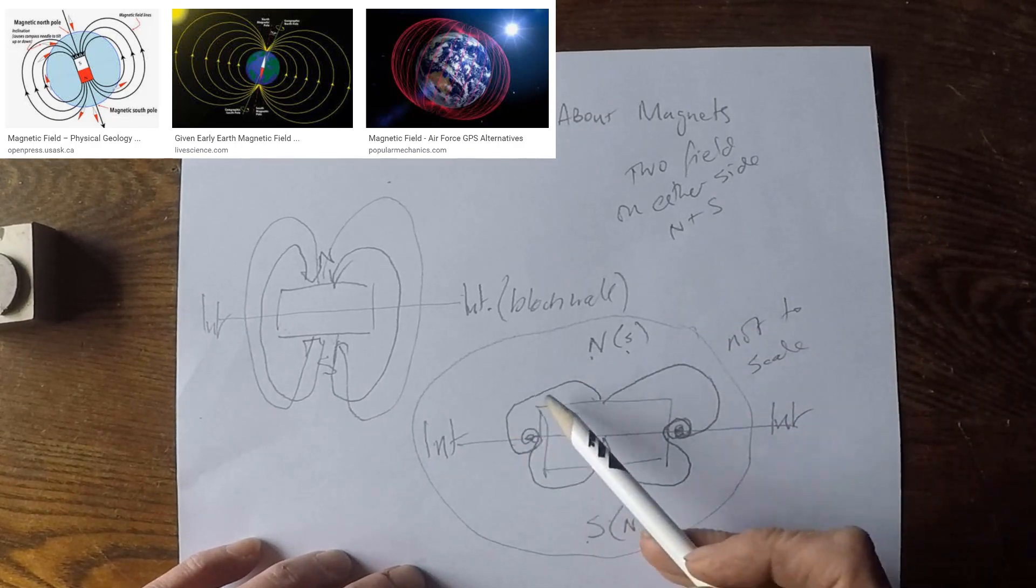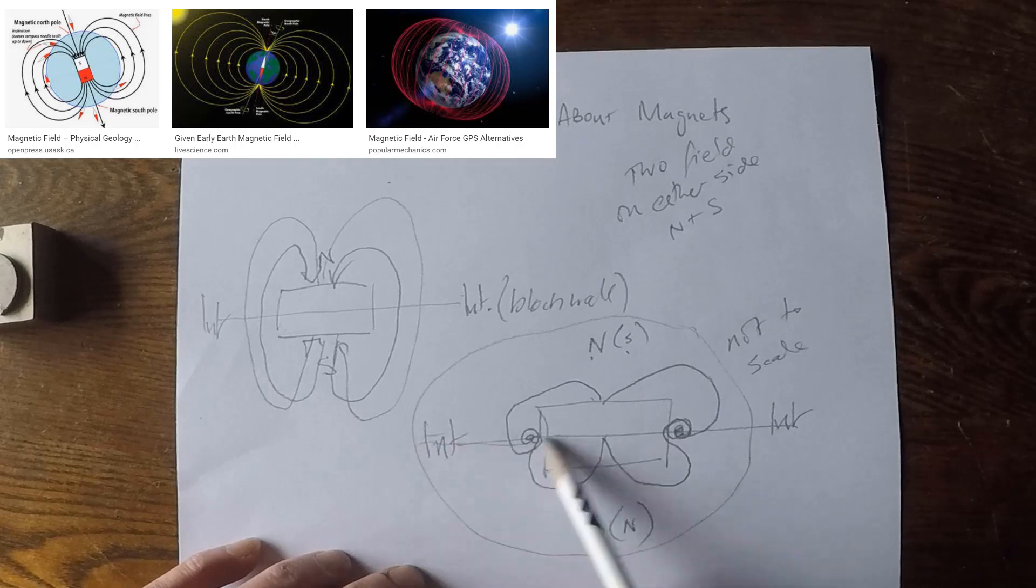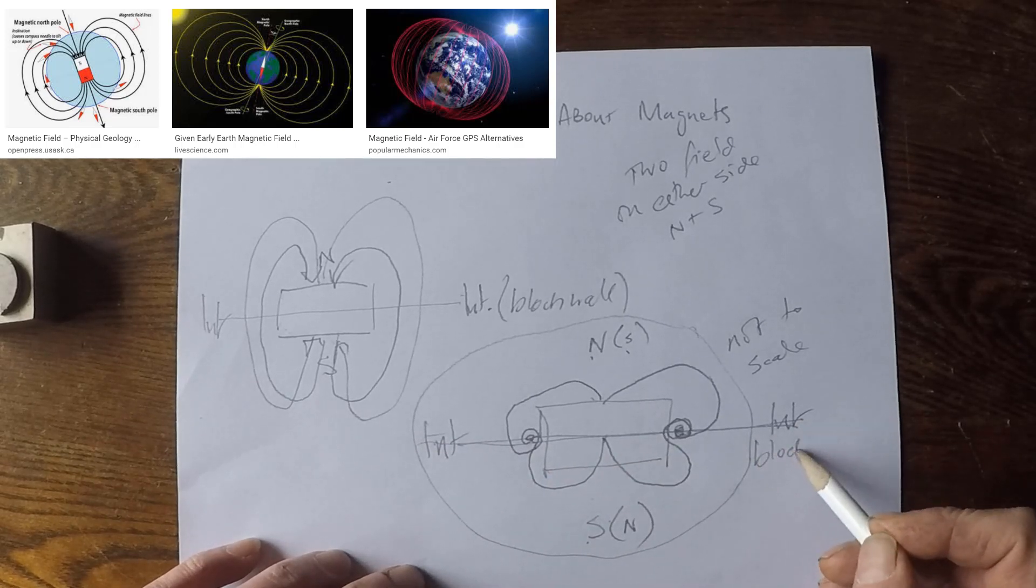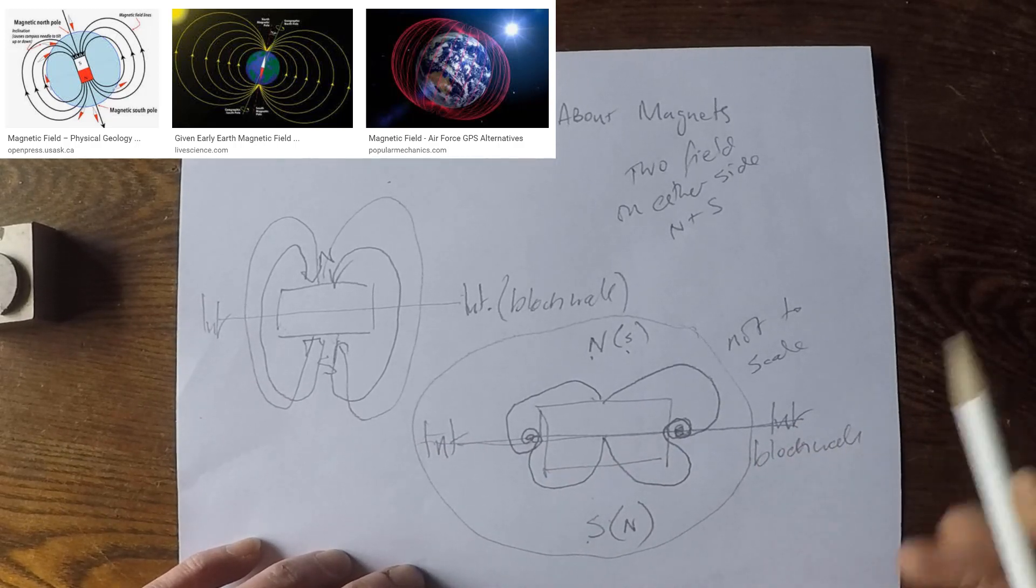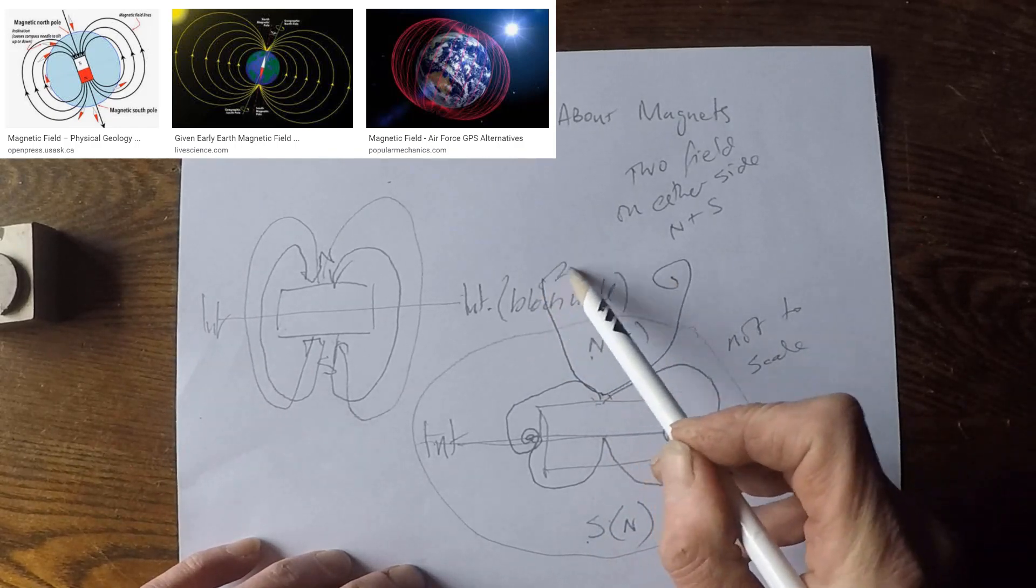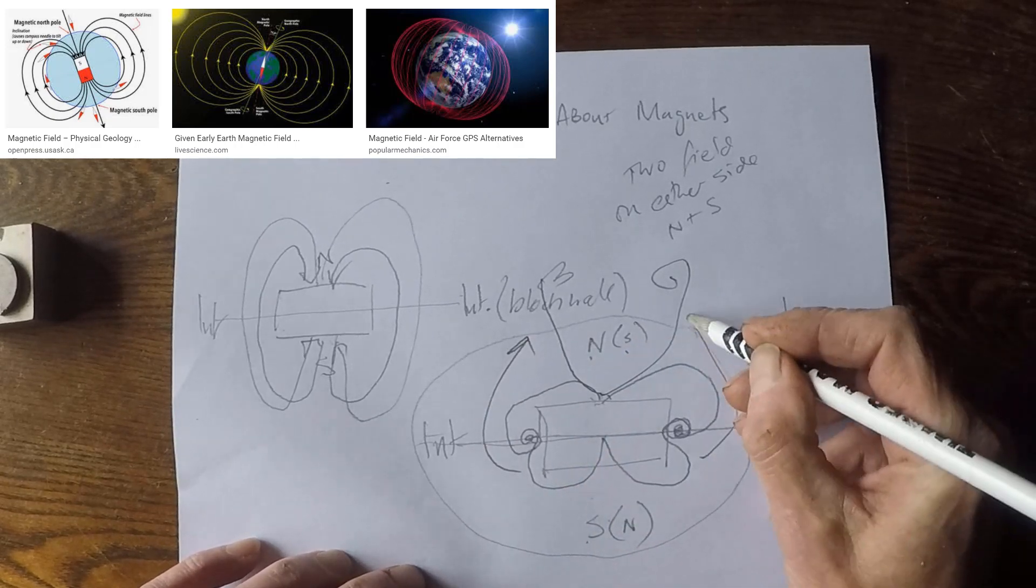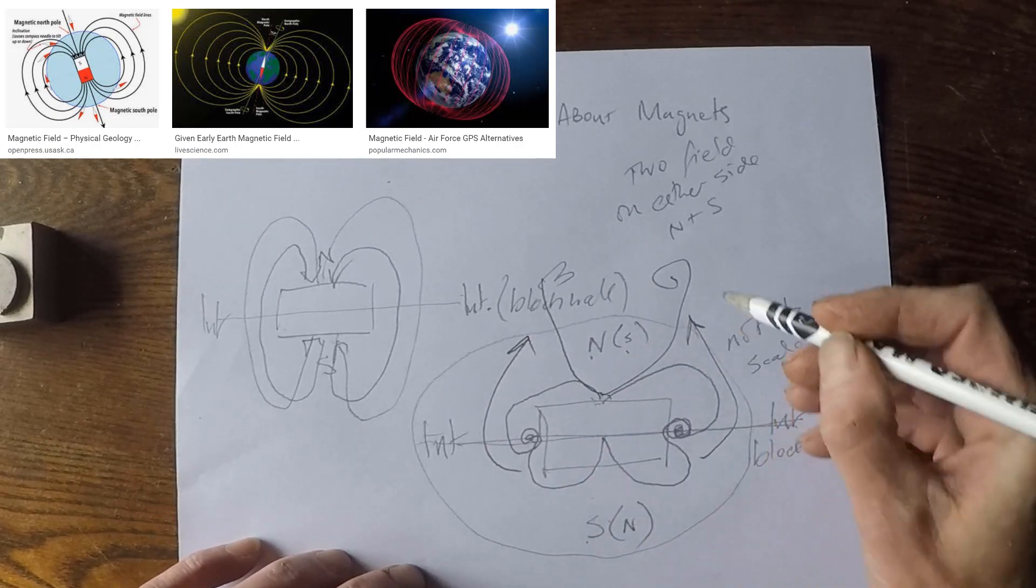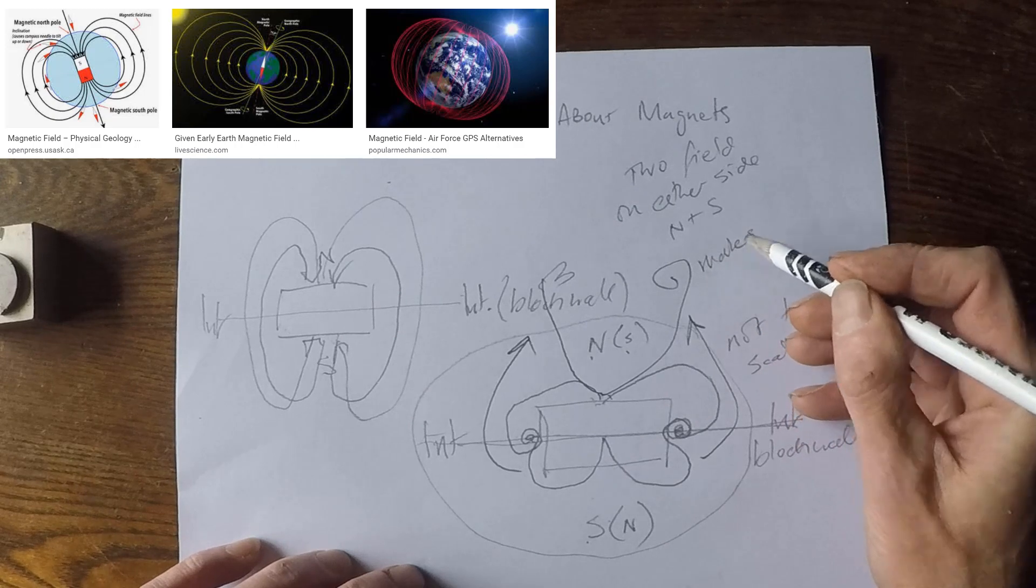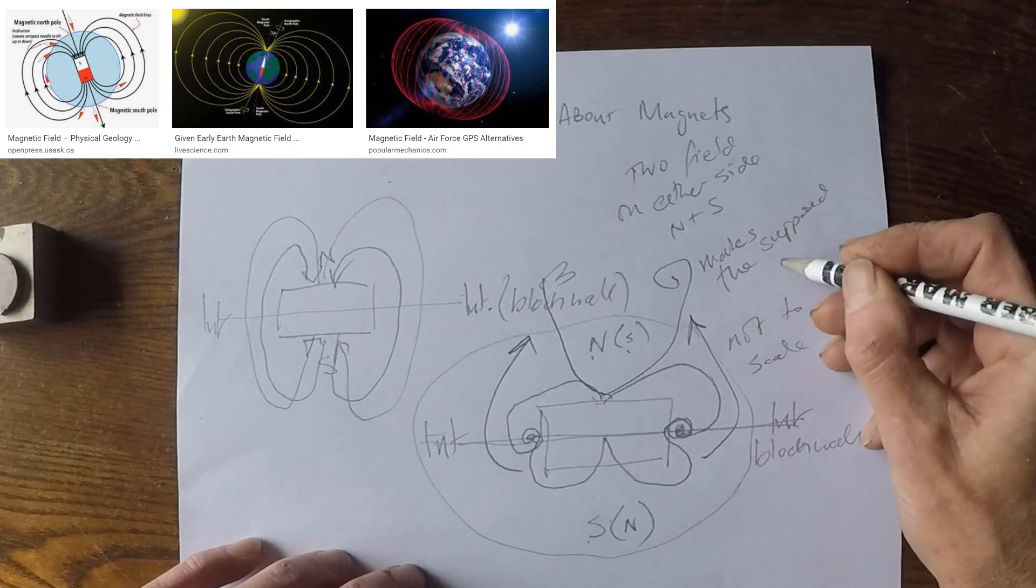So, when the south is trying to come around to the north to lock into it, which it must do on the inertia line, which creates the block wall. Well, that field is going to get pushed away. This south field pushes away this field and makes the supposed vortex.